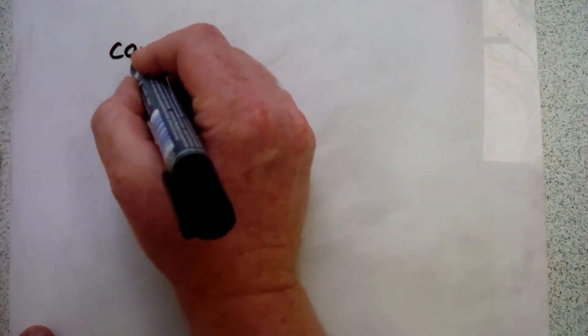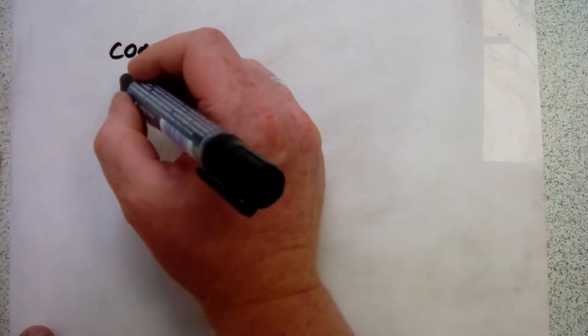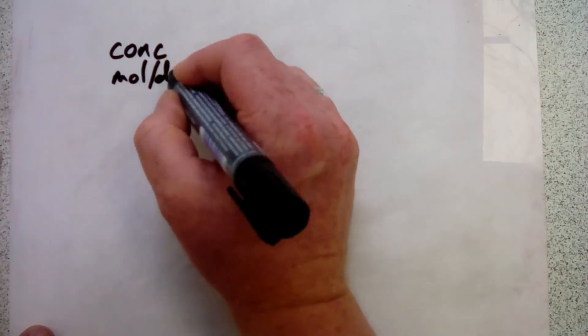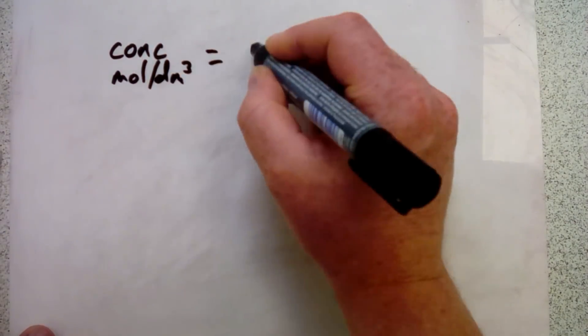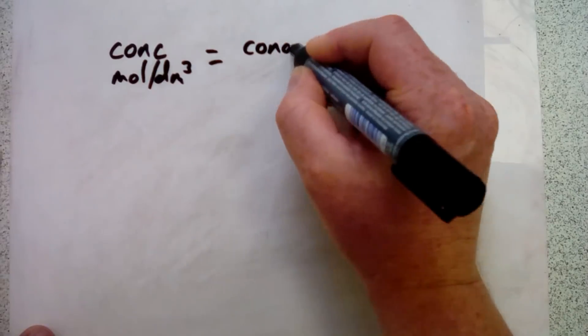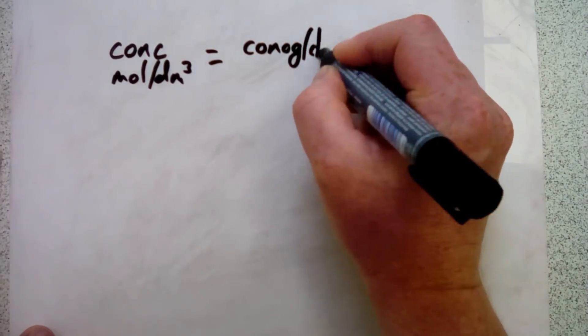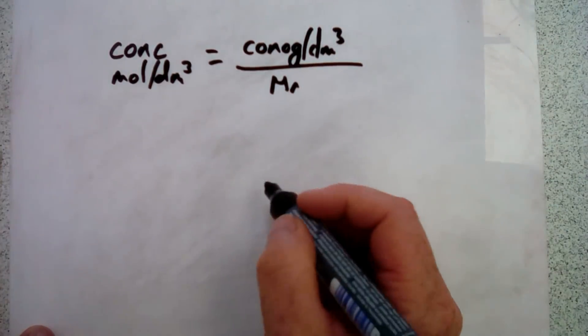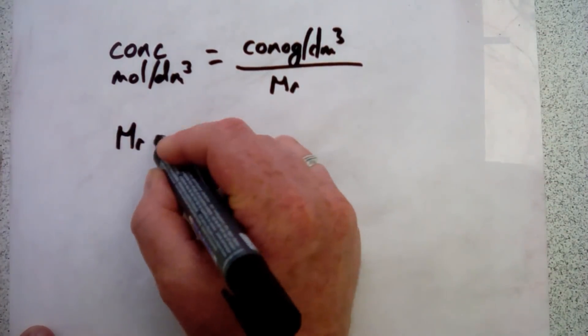We're now in a situation where our concentration in moles per decimeter cubed equals concentration in grams per decimeter cubed divided by relative molecular mass. So we rearrange that: concentration in moles per decimeter cubed times relative molecular mass equals our concentration in grams per decimeter cubed.